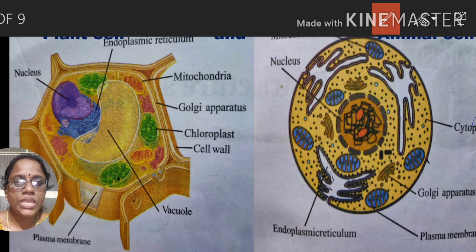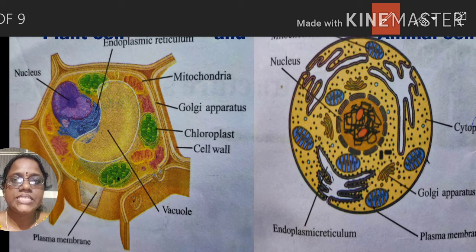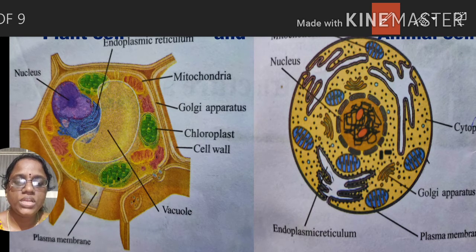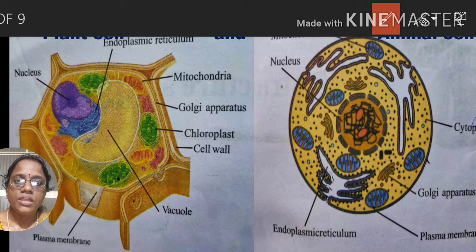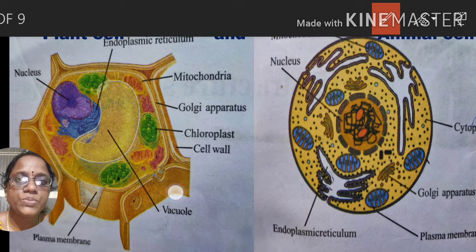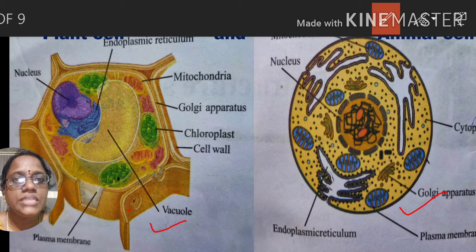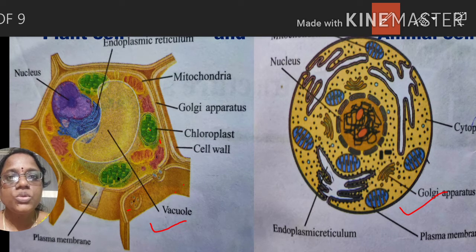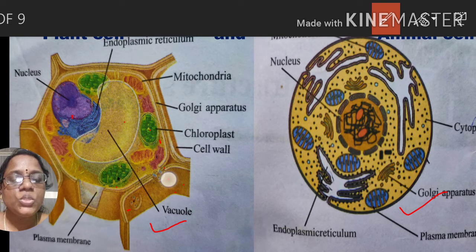In our body, so many organs are there like heart, lungs, kidneys, and liver. All these parts are constructed with the help of cells only. Similarly, just as our human body has parts like head, neck, and hands, the cell also has some parts inside the cell membrane. These parts present inside the cell membrane are called cell organelles.